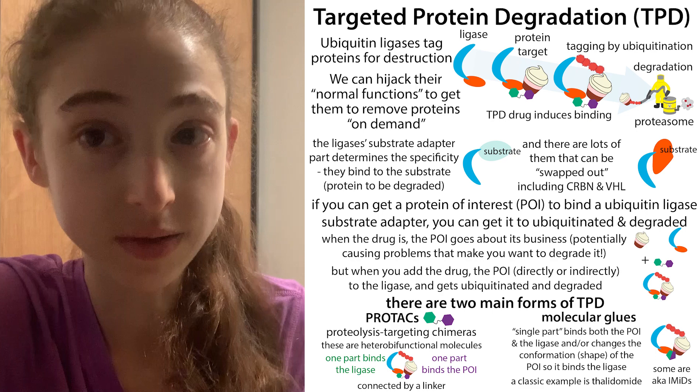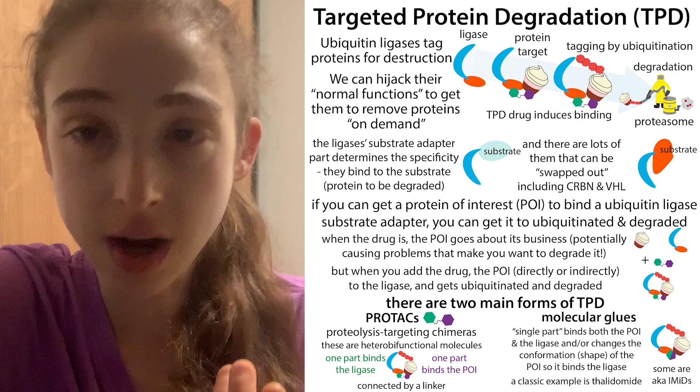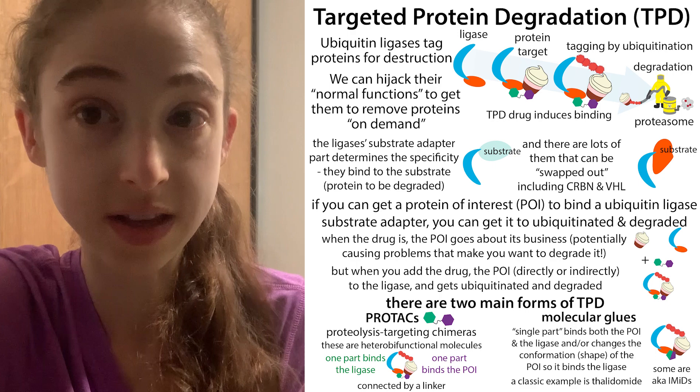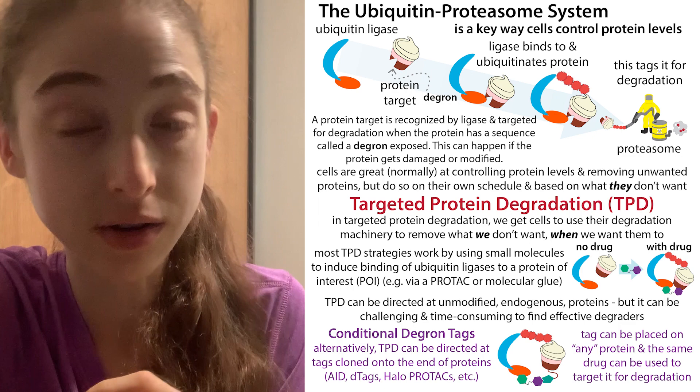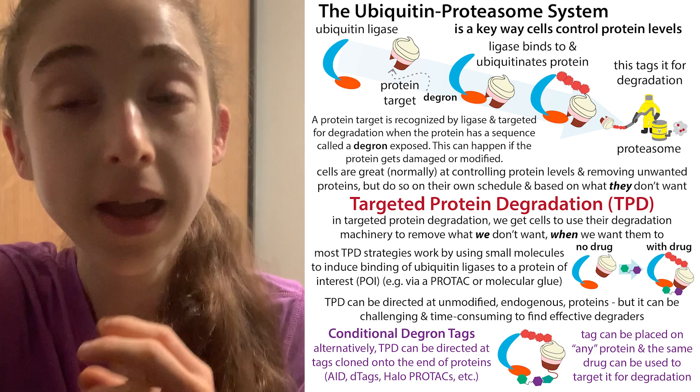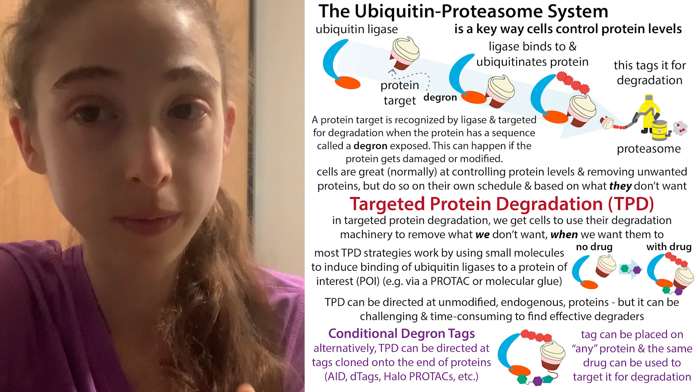In the lab or even in the clinic, waiting for the cells to do it on their own schedule is often not good enough. If you want to study things in the lab, you can genetically add a little extra sequence onto the end of a protein to create a degron that wasn't there before. This is the idea with degron tags: you add a degron onto a protein, which allows you to then degrade that protein on demand.